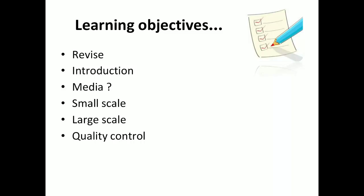First of all, what are the learning objectives? What we are going to learn: introduction to Pseudomonas fluorescens, which is a type of biocontrol agent that controls diseases like chickpea wilt, pigeon pea wilt, rice blast, sheath blight, etc. Then, which media we are going to use for mass multiplication, and what is the procedure for small scale and large scale multiplication of Pseudomonas.